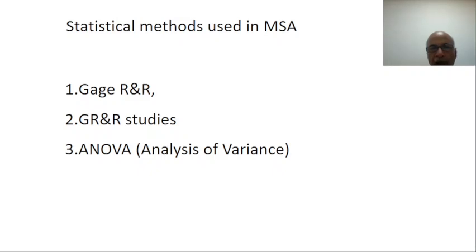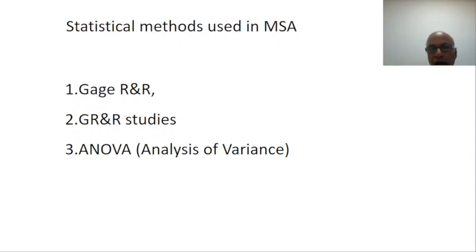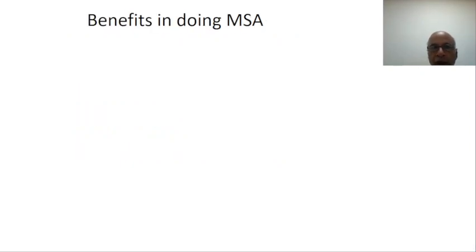There are three methods used in MSA: one is Gauge R&R, another one is GR&R study, and the third one is ANOVA — Analysis of Variance.